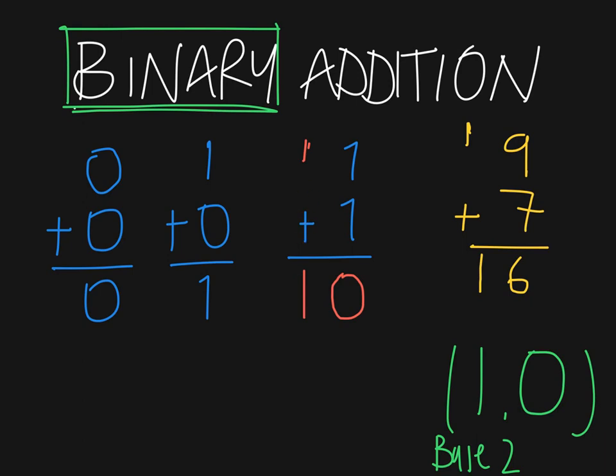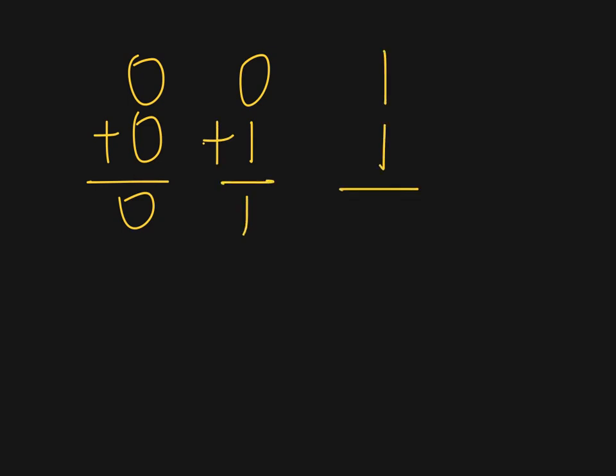Now, hopefully that hasn't confused you. Let's do a fresh slide and just lay these rules out. So, just to summarise, the key rules are 0 plus 0 equals 0, 0 plus 1 or 1 plus 0, the same, and 1 plus 1 gives you 0, 1.